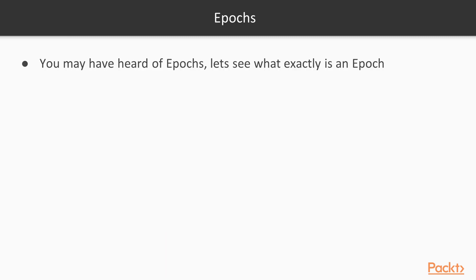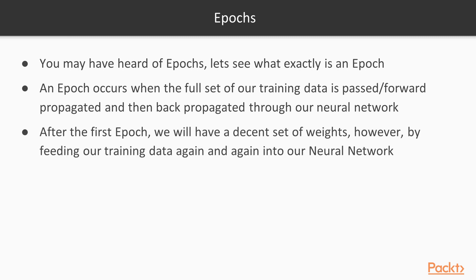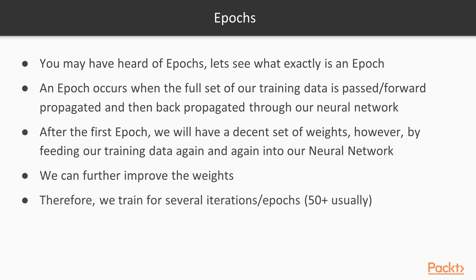An epoch occurs when a full set of training data is passed forward and back propagated through the neural network. After the first epoch we have a decent set of weights, but by feeding training data again and again we continuously improve the weights and lower training loss. This is why we train for several epochs — usually at least 10 is quite good, with 50 or more being ideal.